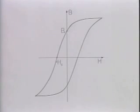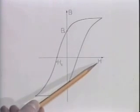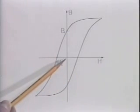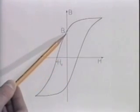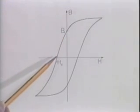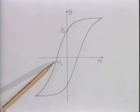The BH trajectory makes this evident. It shows that even when the applied field H is instantaneously zero, there remains a remnant flux density B sub R. And the field must be reversed to minus H sub C, the coercive field intensity, to reduce the flux density to zero.